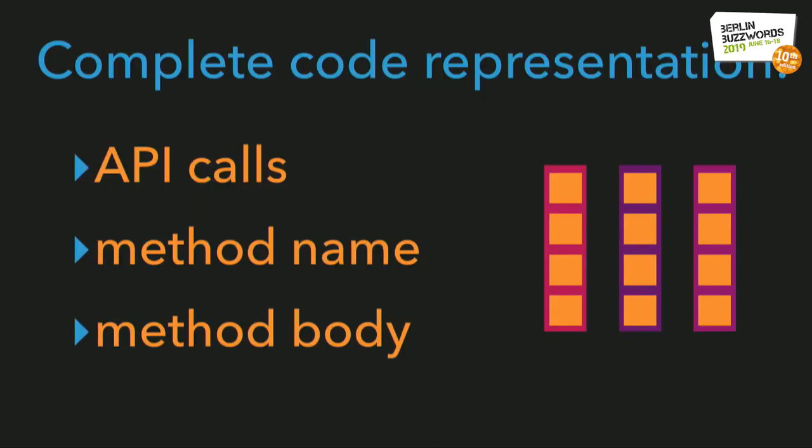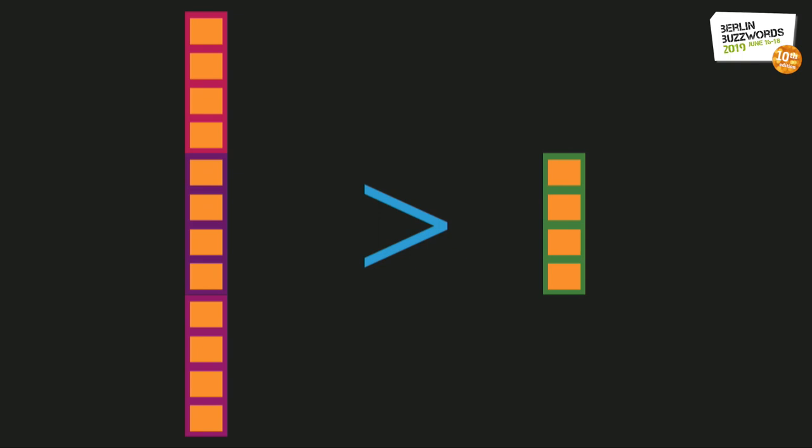This process leaves us with three separate vectors representing all the signals we can squeeze from a method definition. Together, however, they have more dimensions than the text vectors we'll use to represent queries. Since we want to compare the two, they'll have to be the same length, so simply concatenating the three vectors won't work.